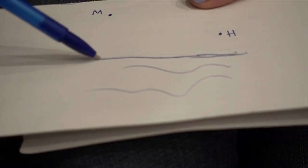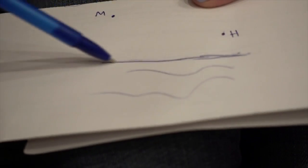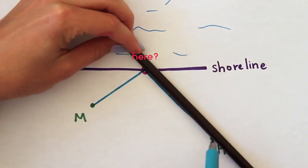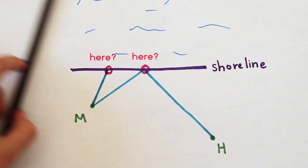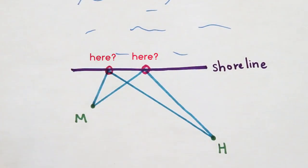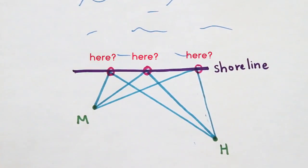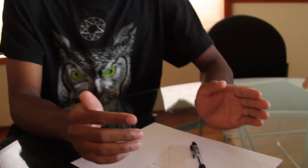It's going to be somewhere along here, and you want the shortest path that goes from Hogsmeade to the pier to Mordor. The shortest total path — you're trying to minimize the complete distance. Exactly.